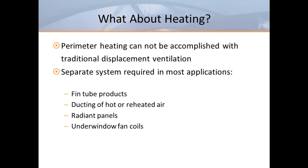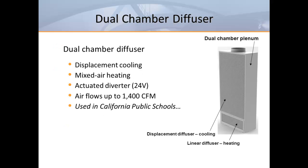Displacement ventilation is only suitable for cooling, but there is an interesting way to deal with heating requirements. Traditionally, displacement ventilation has required the use of separate perimeter heat to deal with loads from exterior walls and perimeter glass — often meaning thin tubular products, separate ducting of hot air, radiant panels, or under-window fan coil units. Here's an interesting solution: a relatively new product design called a dual-chamber displacement diffuser.